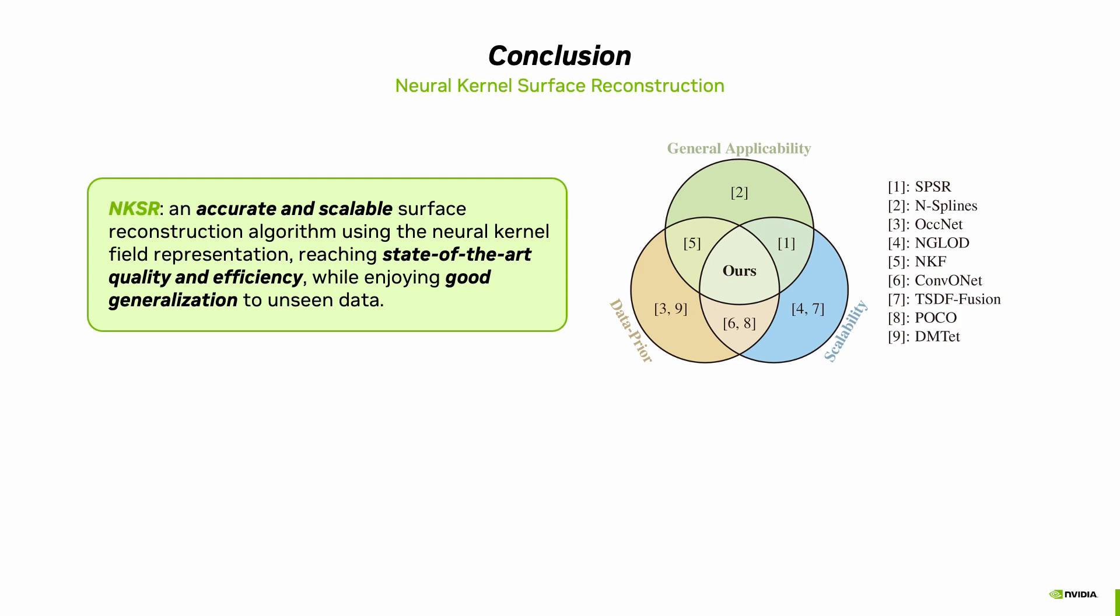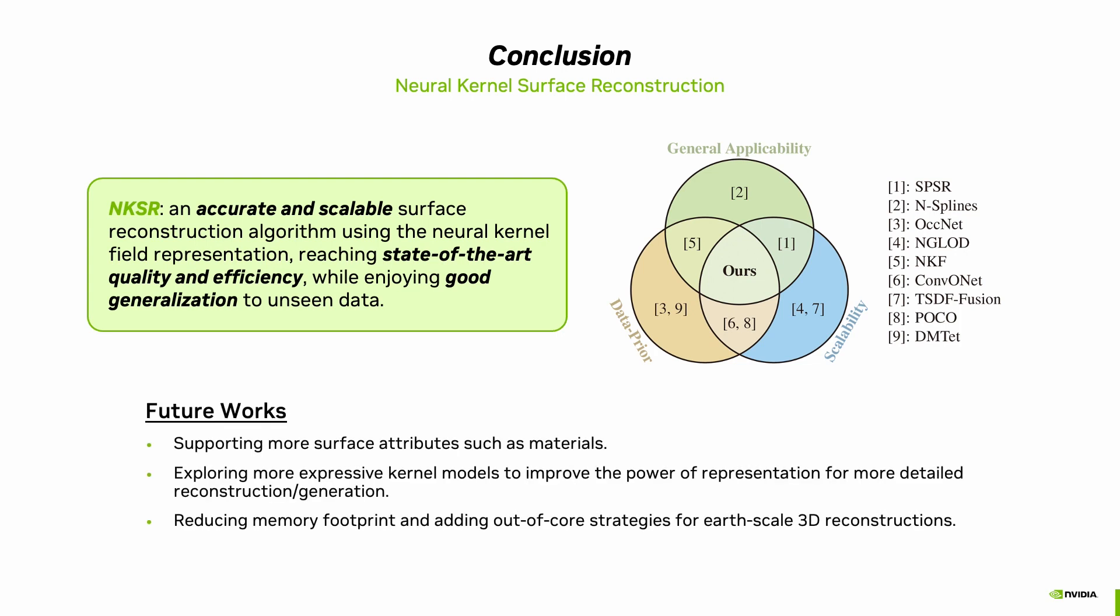In conclusion, our paper presents Neural Kernel Surface Reconstruction, an accurate and scalable surface reconstruction algorithm that uses a neural kernel field representation and achieves state-of-the-art quality and efficiency while demonstrating good generalization to unseen data. Future works include supporting more surface attributes such as materials, exploring more expressive kernel models to improve the power of representation for more detailed reconstruction and generation, and reducing the memory footprint and adding out-of-core strategies for Earth-scale 3D reconstructions. These improvements will allow for even more versatile and powerful applications of our approach in a wide range of real-world scenarios.